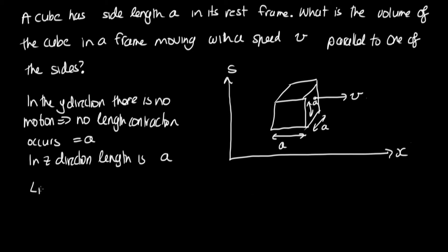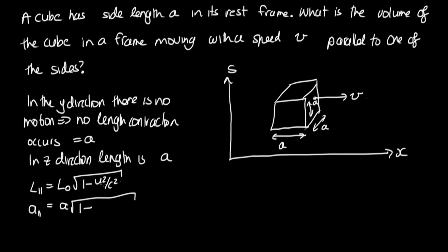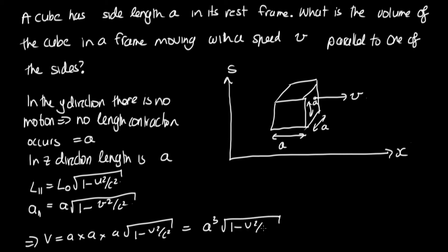Using the formula we derived, the length in the moving frame is L₀ times the square root of 1 minus u²/c². In this case, a-parallel equals a times the square root of 1 minus v²/c², since the relative speed between frames is v. So the volume, which is length times width times height, equals a times a times a√(1 − v²/c²), giving a volume of a³ times the square root of 1 minus v²/c².